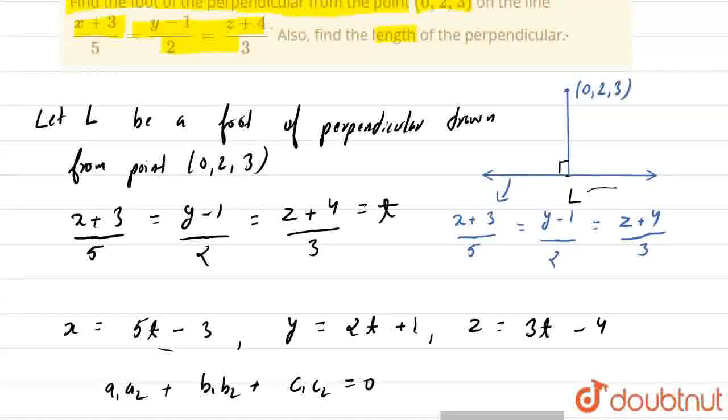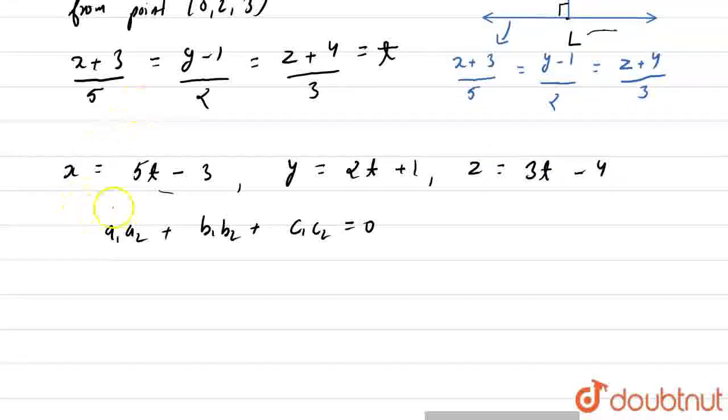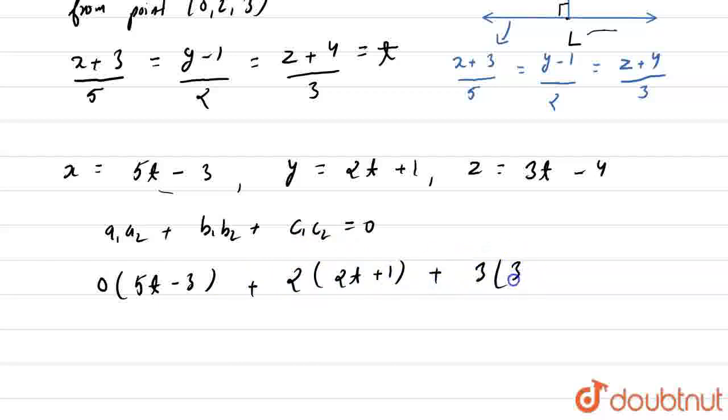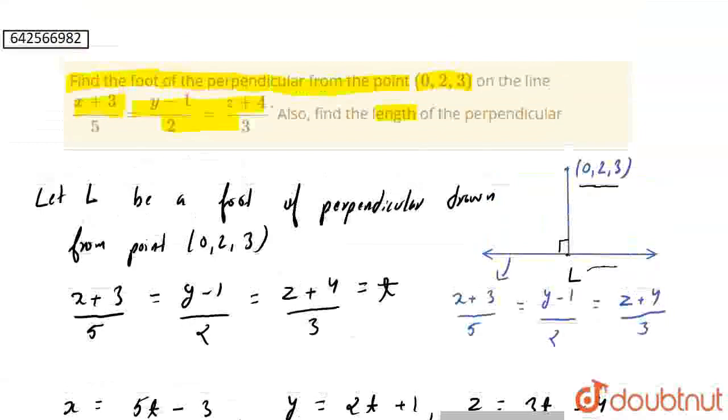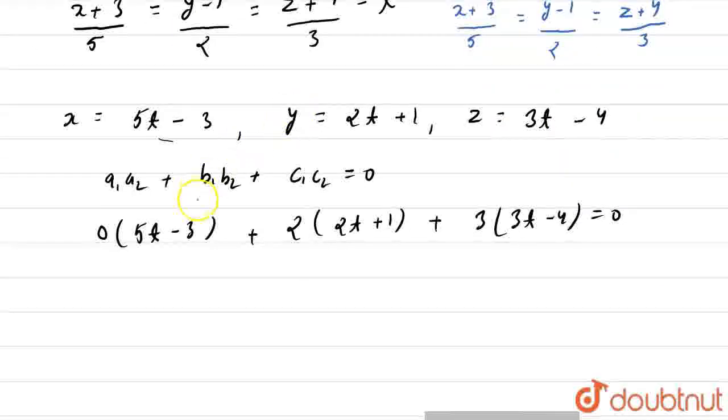So there you can see that these coordinates represent the direction ratio of this line and for other line these points are given as (0,2,3). So if we multiply them then we get 0×(5t-3) + 2×(2t+1) + 3×(3t-4) = 0.